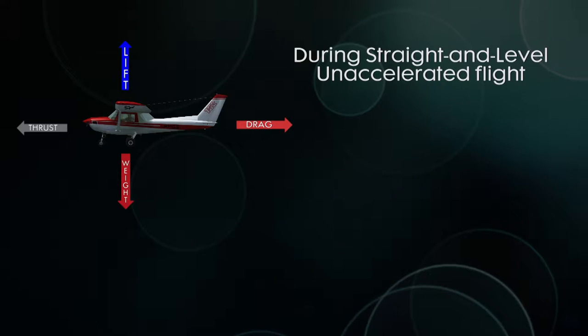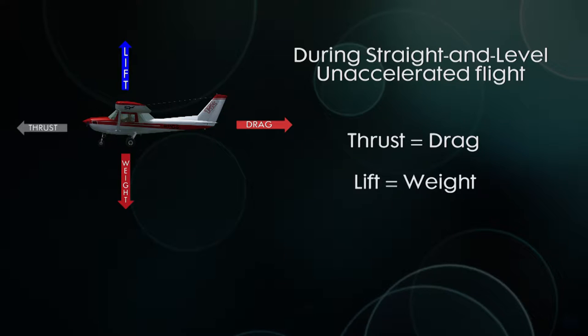During straight and level unaccelerated flight, thrust is equal to drag and lift is equal to weight. Straight and level unaccelerated means the airplane is not climbing or descending, not in a turn, and not speeding up or slowing down. If you get more lift the airplane will climb, if you reduce lift it will descend, if you add more thrust it will go faster, and if you reduce thrust it will go slower. Also, if you stick your hand out the window, it will technically create more drag which will slow you down a little bit.